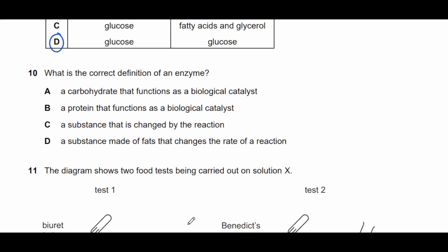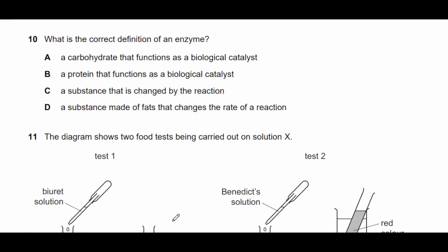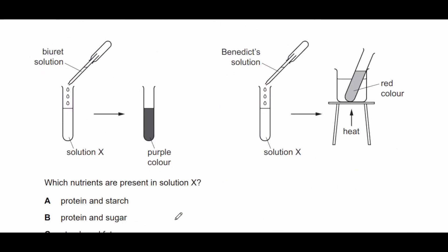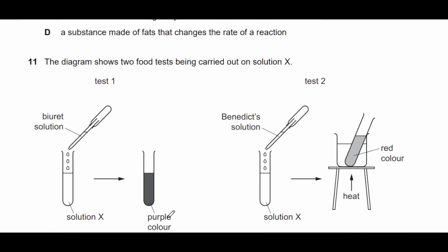Question ten: what is the correct definition of an enzyme? Firstly, an enzyme is a protein, and it acts as a catalyst to speed up the rate of a reaction. Therefore the answer is: a protein that functions as a biological catalyst.